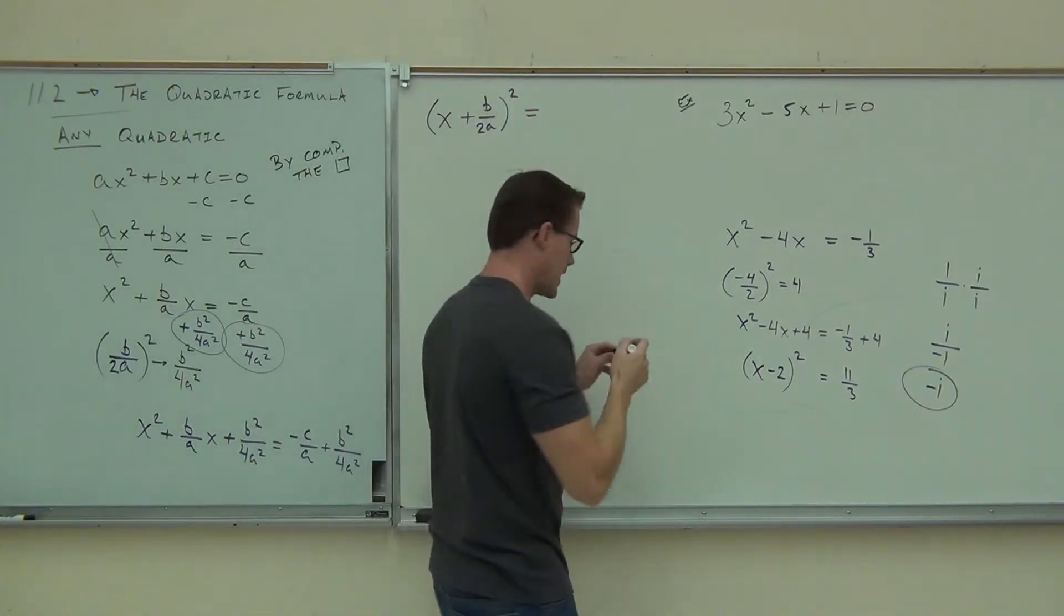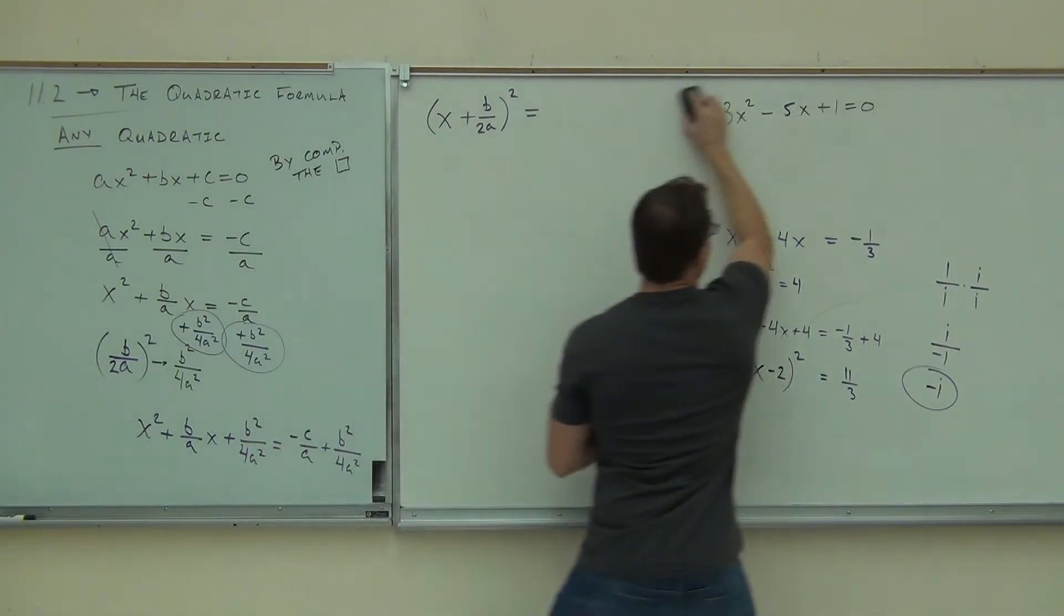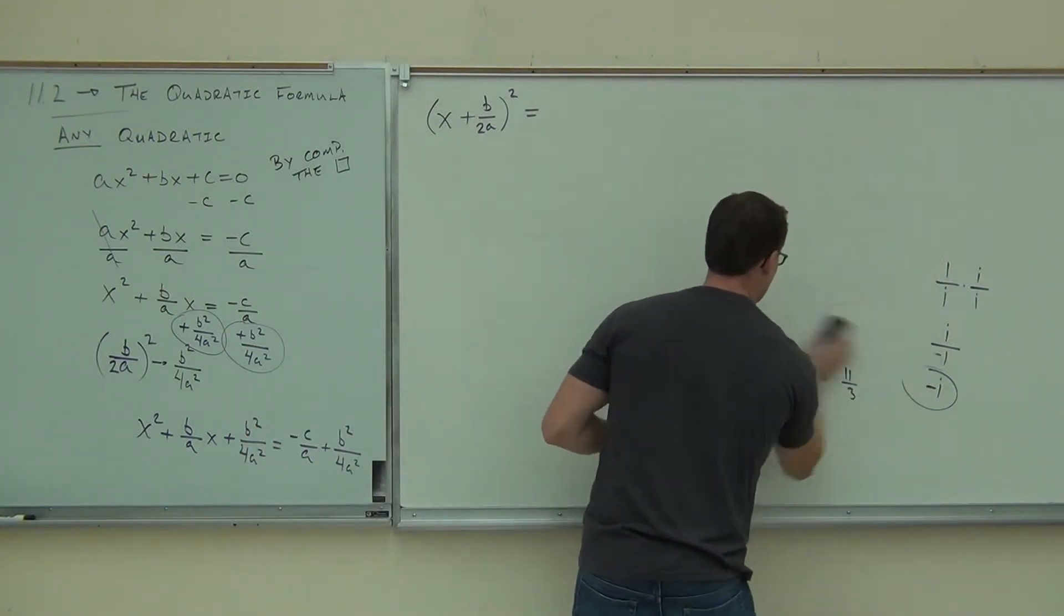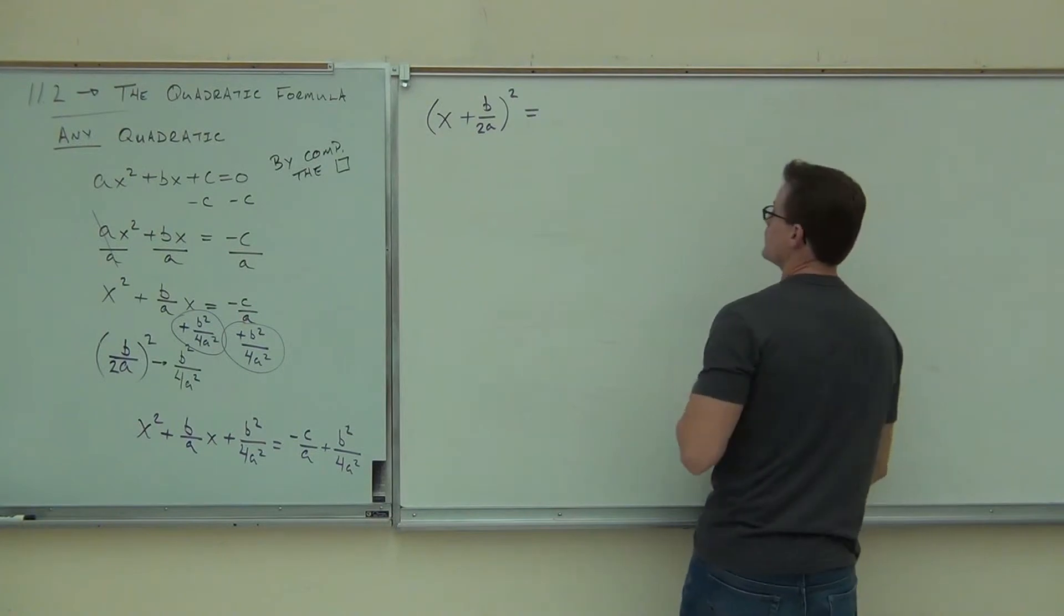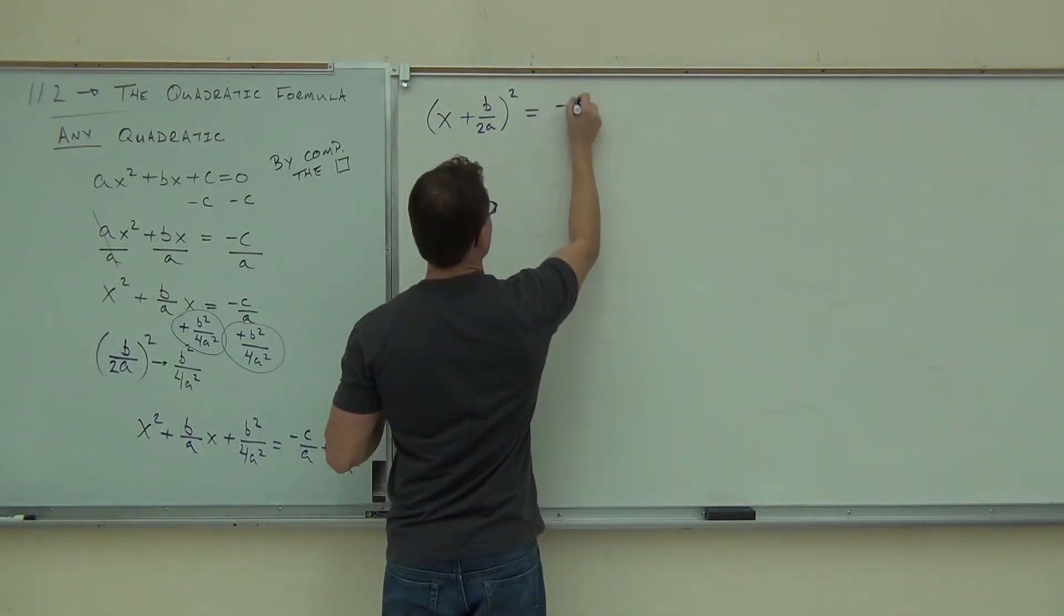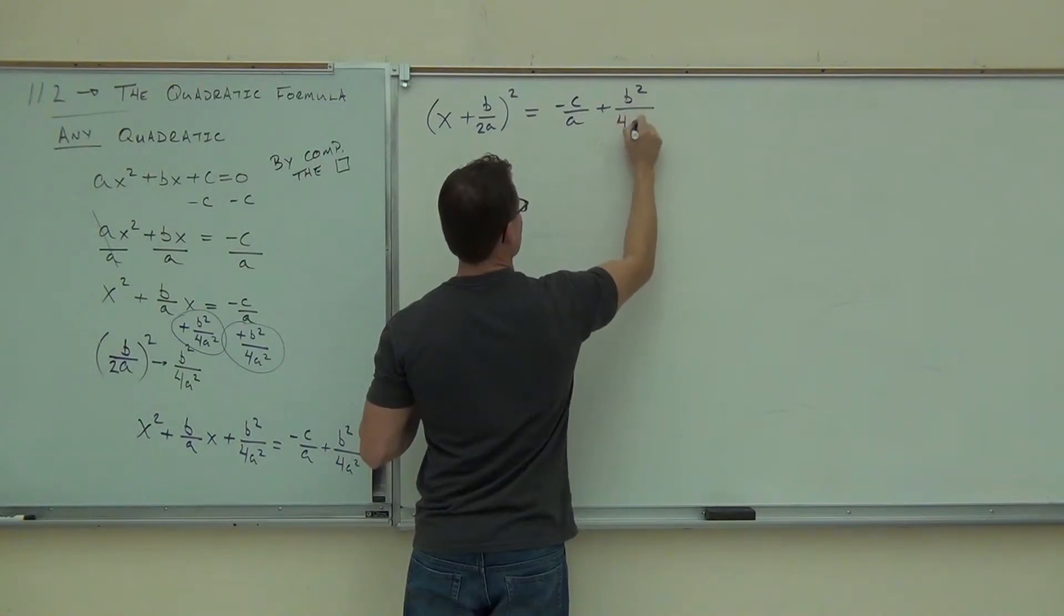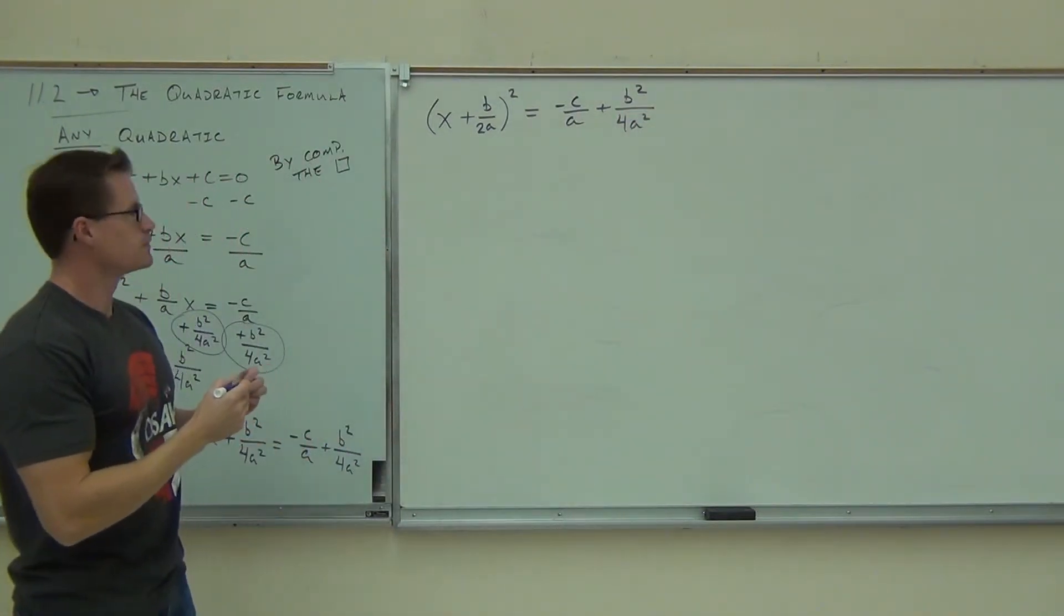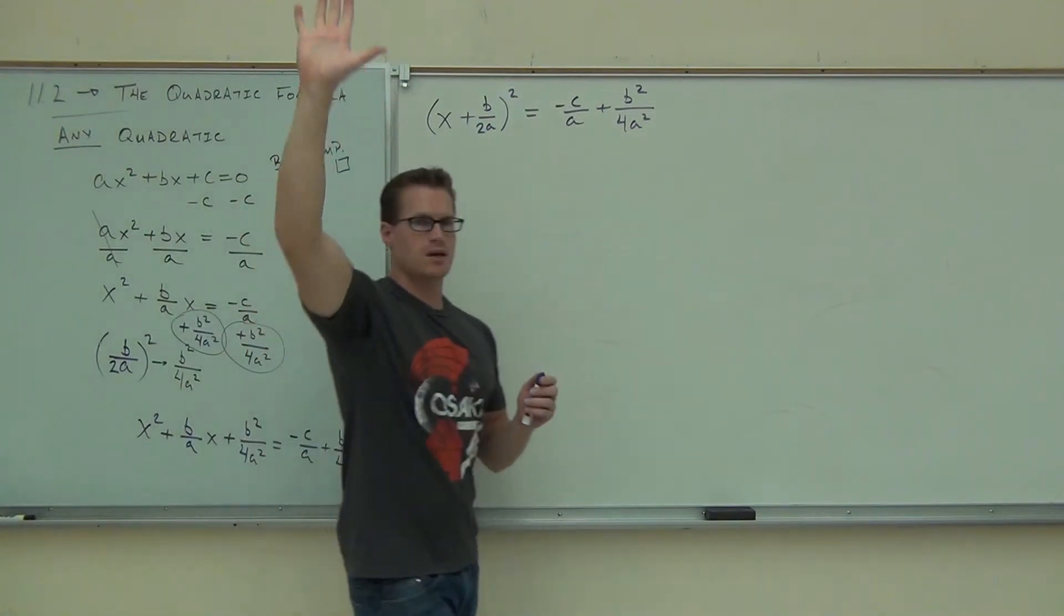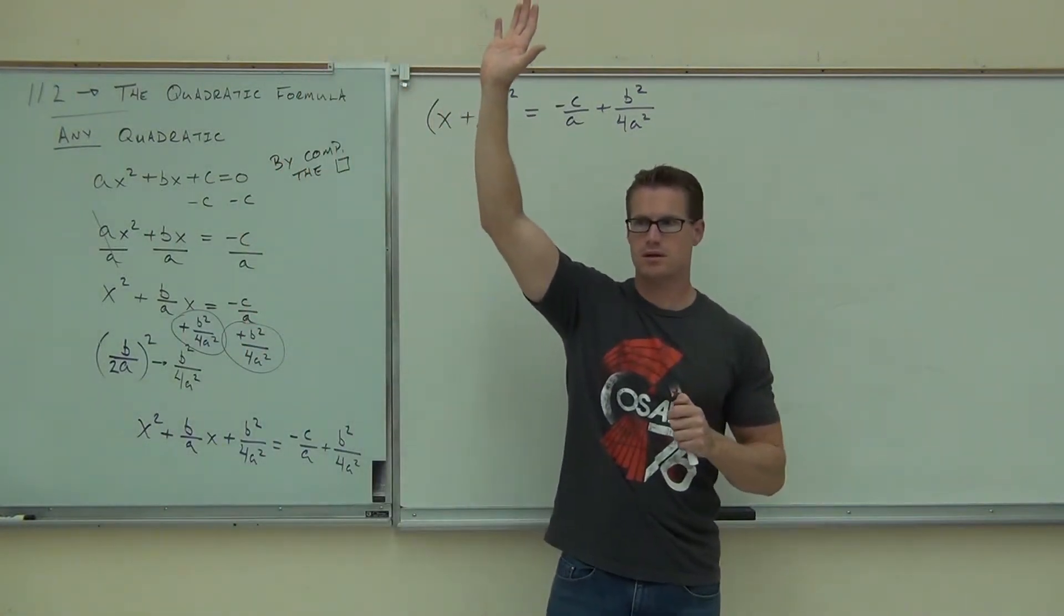On the right-hand side, yes, it looks a little nasty. I'm going to work on that in just a bit. On the right-hand side, I have negative c over a plus b squared over 4a squared. Raise your hand. Feel okay getting down that far?